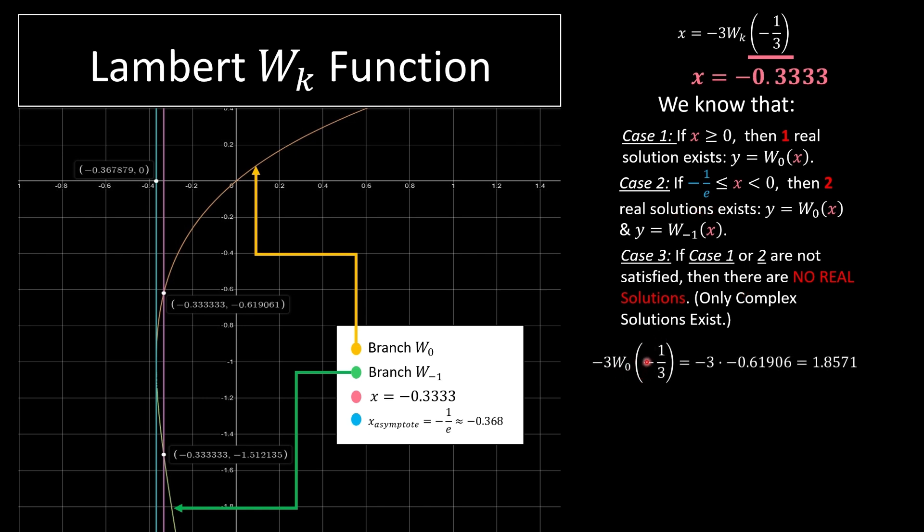So now we apply inside a calculator. We can look at that graph and we acquire an answer negative 0.61906 and we're going to multiply by negative 3 and that's equal to 1.857. And for branch W of negative 1, we do the same thing with the calculator. We acquire this answer and that's it for this question.